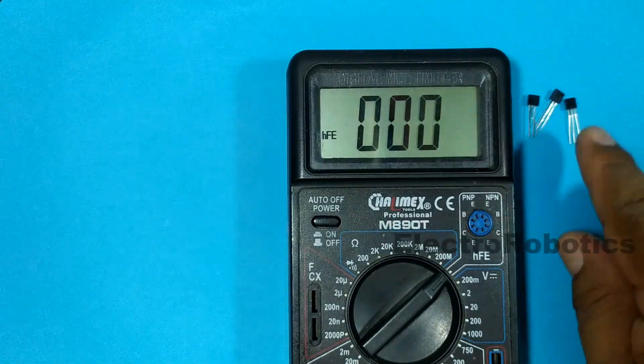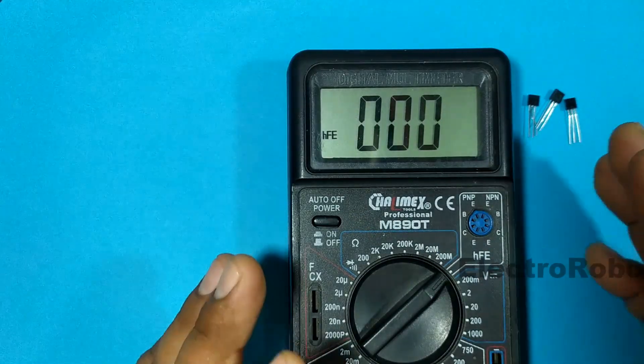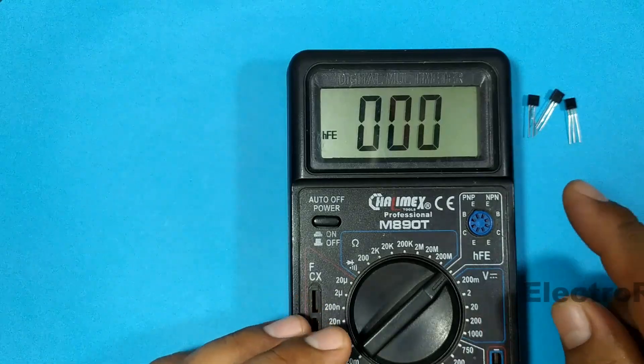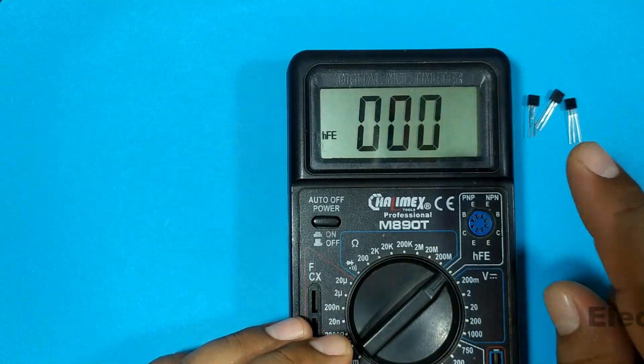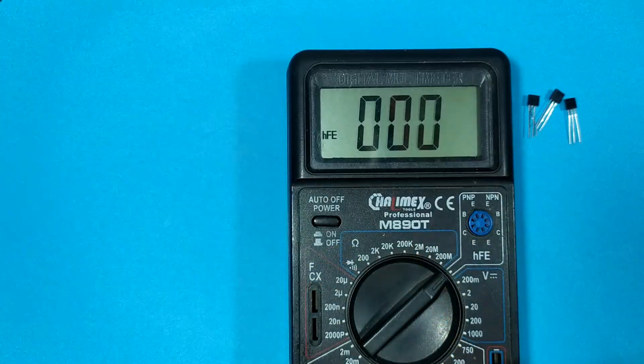It is almost the same as the BC547, but it has more gain than the previous one. This way you can use any transistor you have, but let it be NPN type BJT. Let's put together the circuit.